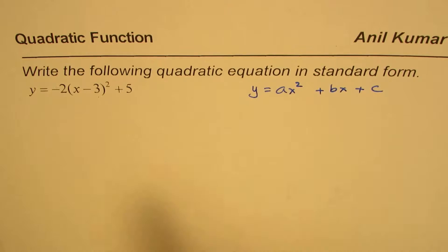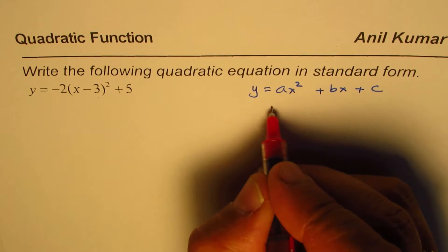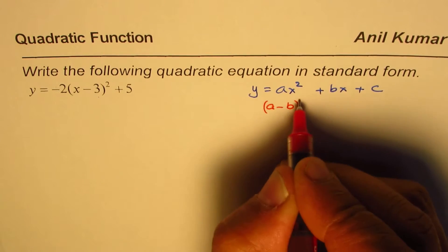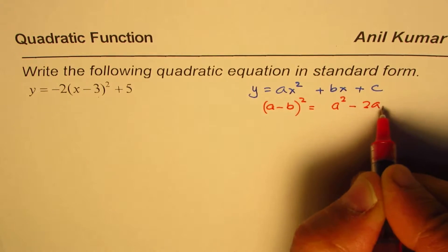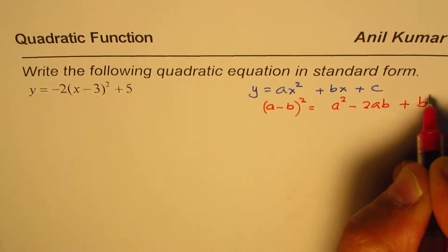We'll use the formula a minus b whole square. So, a minus b whole square is a square minus 2ab plus b square.